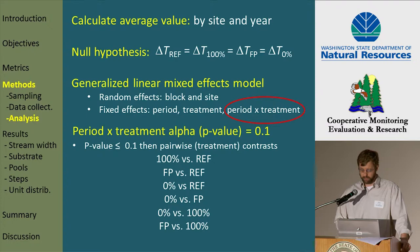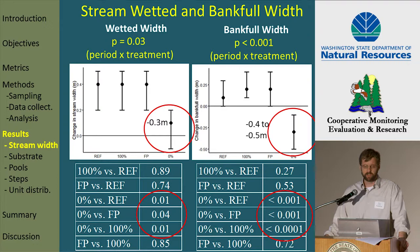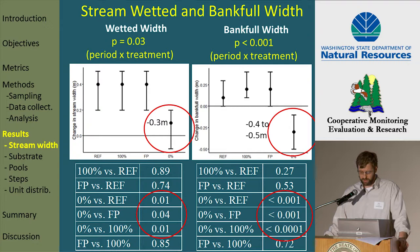Our first result: stream wetted and bankful width, where we did see some pretty significant results in the 0% treatment. For wetted width, we estimated an increase post-harvest in all of our treatments and the reference, but that increase was less in the 0% sites — essentially the wetted widths were constrained in that treatment. Bankful width estimates actually decreased in the 0% and increased elsewhere, and those differences amount to the bankful width being less than the other treatments and the reference by 0.4 to 0.5 meters.